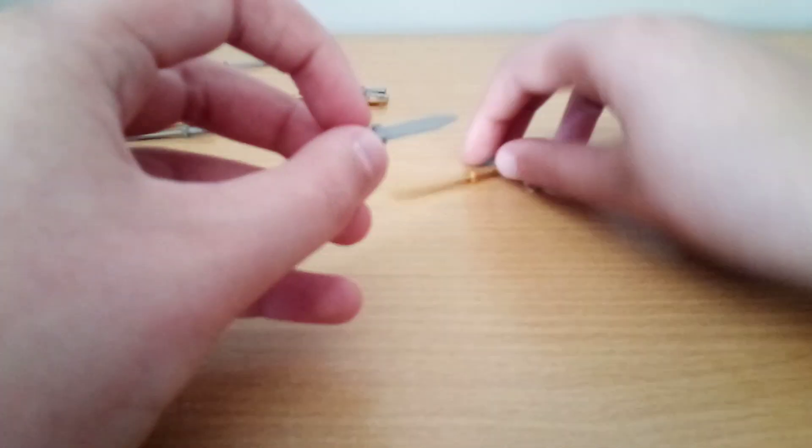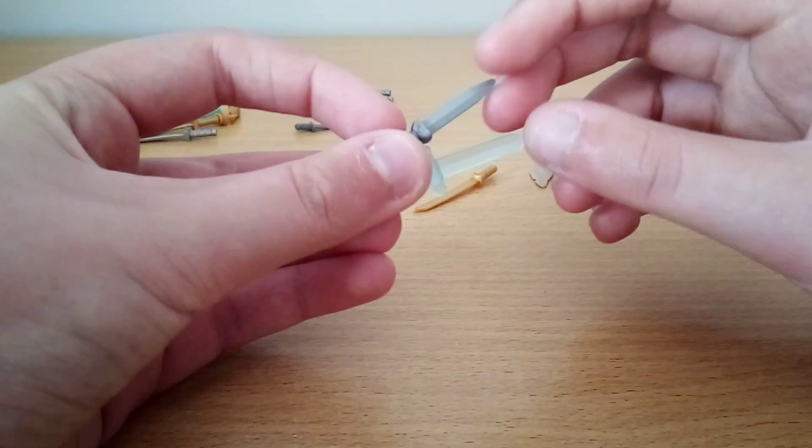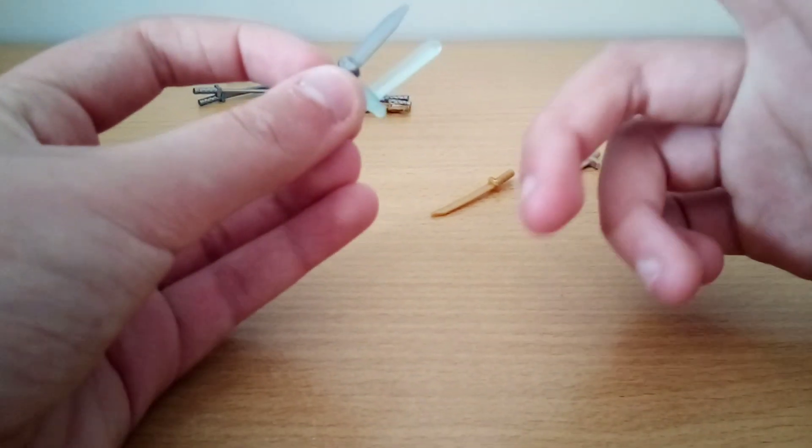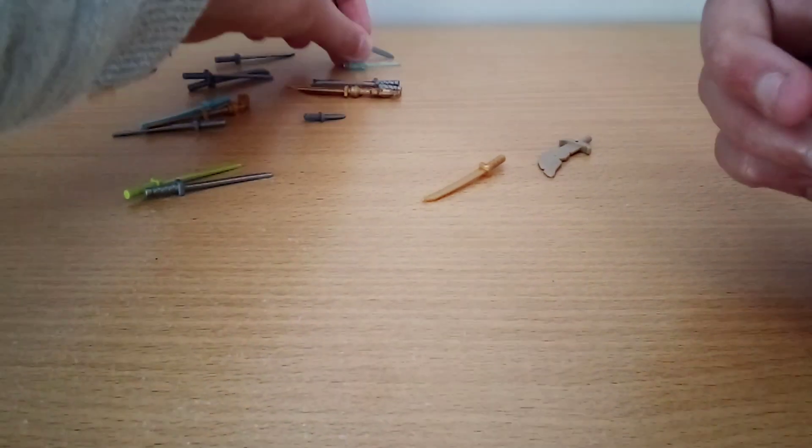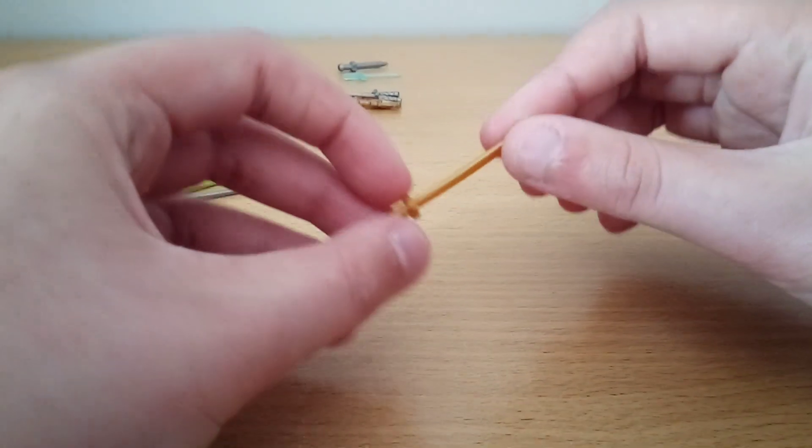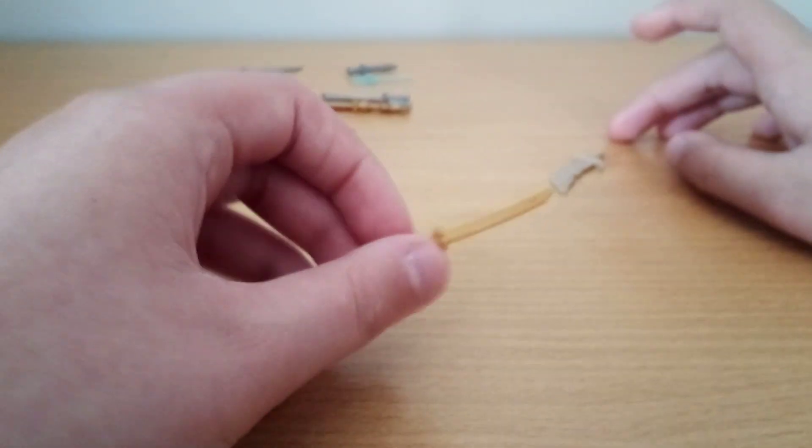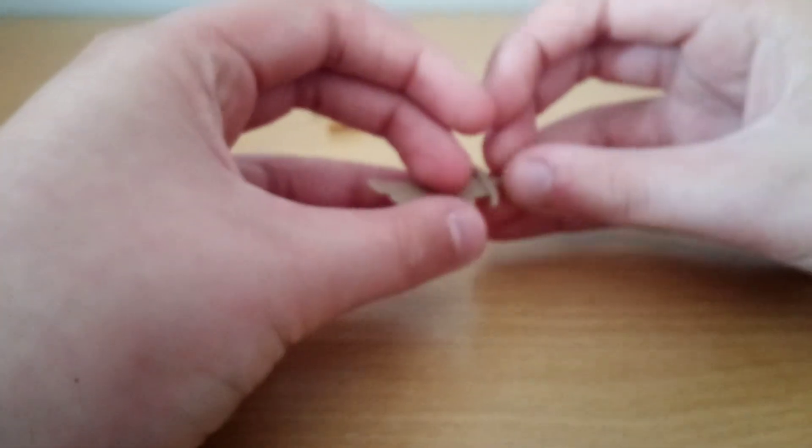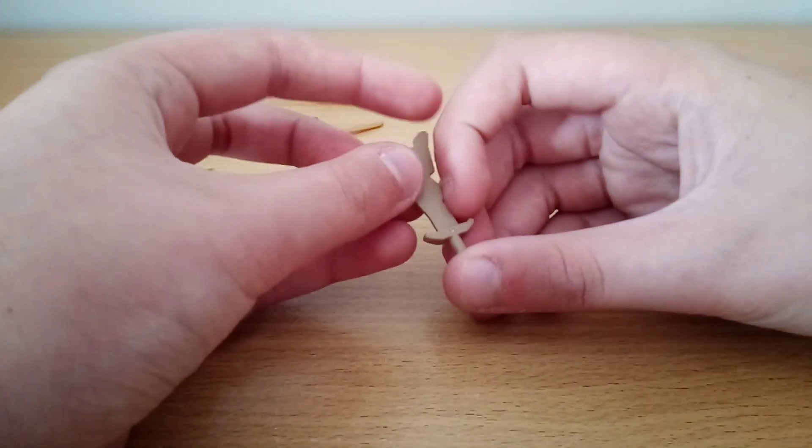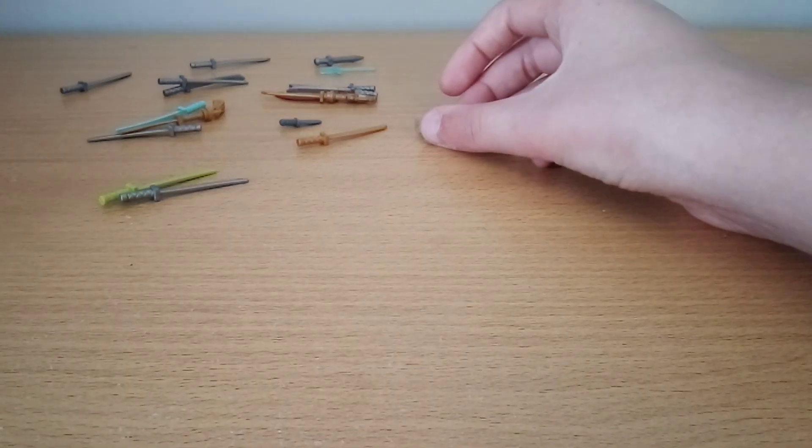These two are from $6 Minifig Packets each. From Hercules. From the Fright Knight. This is from the $35 Golden Dragon set, although it comes in quite a lot of places. And this is from the $25 Samurai Mech set, but it does come in quite a few places.